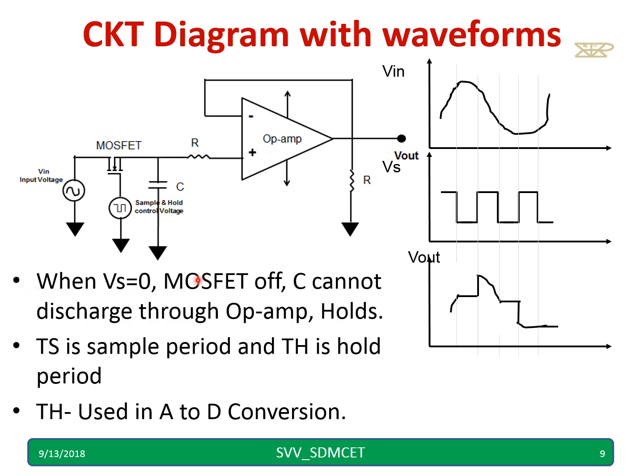When Vs is equal to zero, MOSFET is off. C cannot discharge through the op amp because input resistance of the op amp is very high. Ts is the sample period and Th is the hold period. This is used in A to D conversion. This holding time period, whatever the voltage is held, can be used to convert to digital.